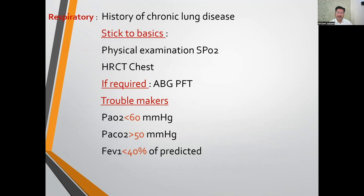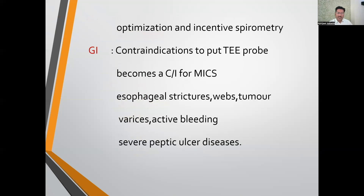A detailed examination of the respiratory system is very important. For patients without chronic lung conditions, physical examination, baseline saturation, and HRCT will give a fair idea of whether the patient can tolerate one lung ventilation. If the patient has any chronic lung condition, always perform ABG and pulmonary function tests. PO2 less than 60, PCO2 more than 50 on baseline ABG, and FEV1 less than 40% predicted on PFT indicate patients who may have trouble intra-op — tendency to desaturate — and post-op difficulty weaning and extubating. Optimization is very important, and we should always encourage incentive spirometry for all patients.